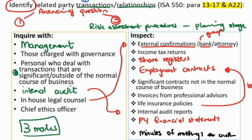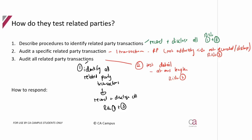Those are the procedures we perform for identifying related party transactions — applicable to question one and part one of question three. Now let's look at what we need to do to audit and ultimately find the answers to question two and part two of question three.